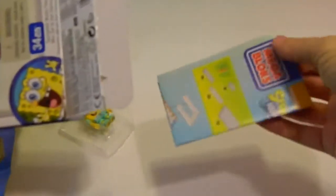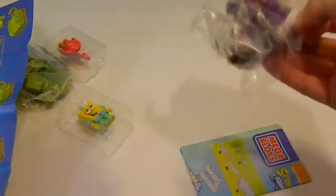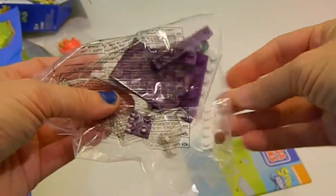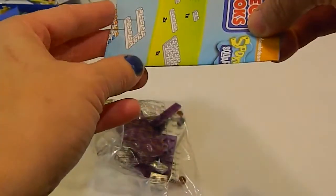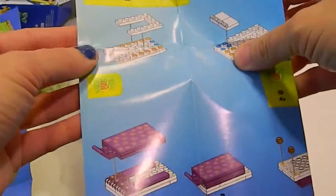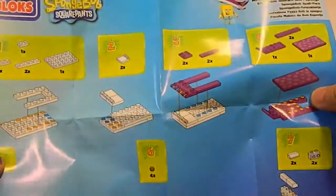Right there. That's your instructions. And your Spongebob pieces. Purple pieces. Purple bed. See his instructions. Put together the whole Spongebob bed.